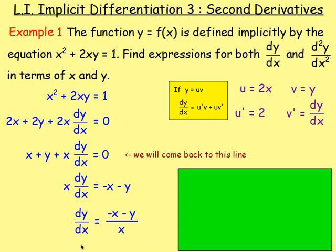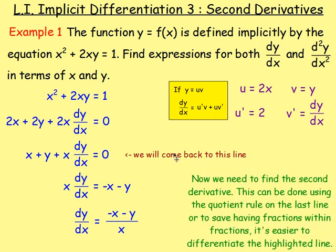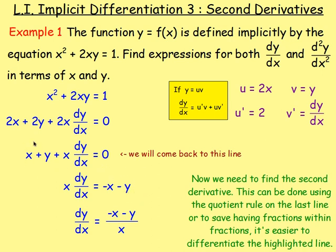Next, we want to find an expression for d2y by dx squared. You could apply the quotient rule and differentiate dy by dx directly. But what else could we do? You could also go back a couple of lines to the earlier differentiated line and differentiate that instead to get the second derivative. What's probably easier is differentiating that highlighted line, because if we apply the quotient rule, differentiating y is going to give us dy by dx inside a massive fraction — fractions within fractions — which is very ugly and quite confusing. So let's go back to that earlier line. It will still give you the same answer, so if you want to try it the other way, feel free.